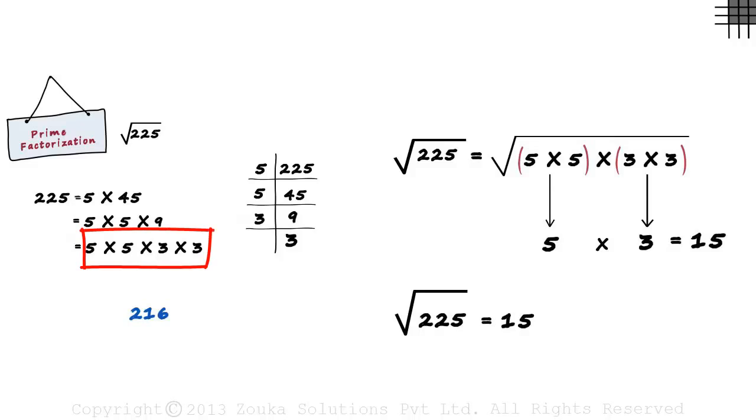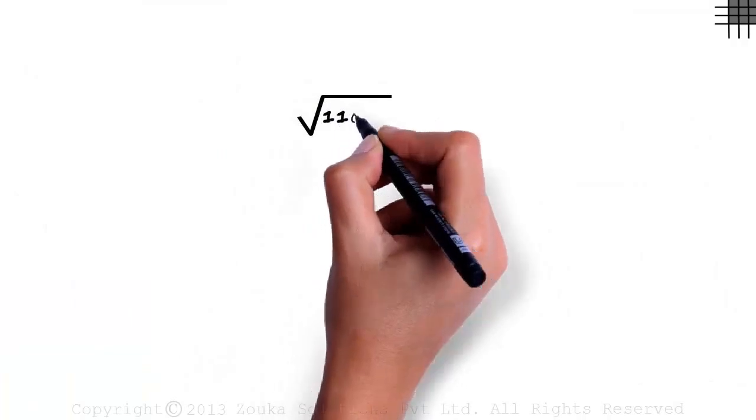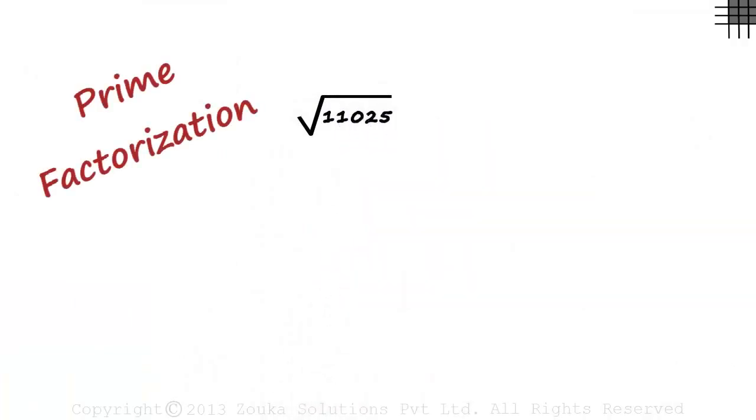All we did is broke down the number to its prime factors, made pairs, chose one number from each pair and multiplied them. In the next part of this video, we will see how we can find the square root of 11,025 using this method.